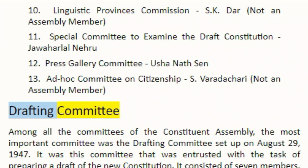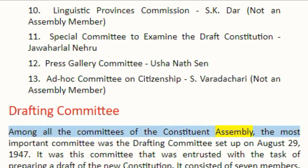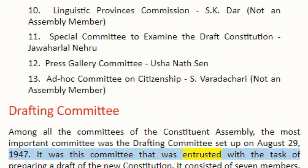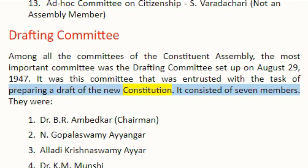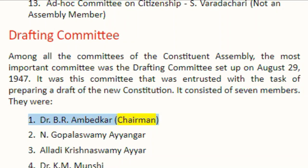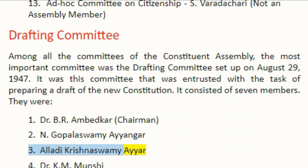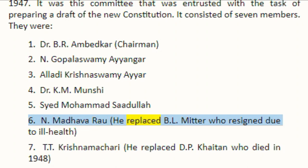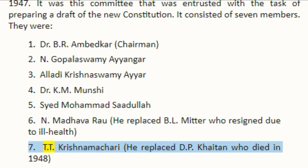Drafting Committee. Among all the committees of the Constituent Assembly, the most important committee was the drafting committee set up on 29 August 1947. It was this committee that was entrusted with the task of preparing a draft of the new constitution. It consisted of seven members: 1. Dr. B.R. Ambedkar, Chairman; 2. N. Gopalaswami Ayyangar; 3. Alladi Krishnaswami Ayyar; 4. Dr. K.M. Munshi; 5. Syed Muhammad Saadullah; 6. N. Madhava Rao, who replaced B.L. Mittal who resigned due to ill health; 7. T.T. Krishnamachari, who replaced D.P. Khaitan who died in 1948.